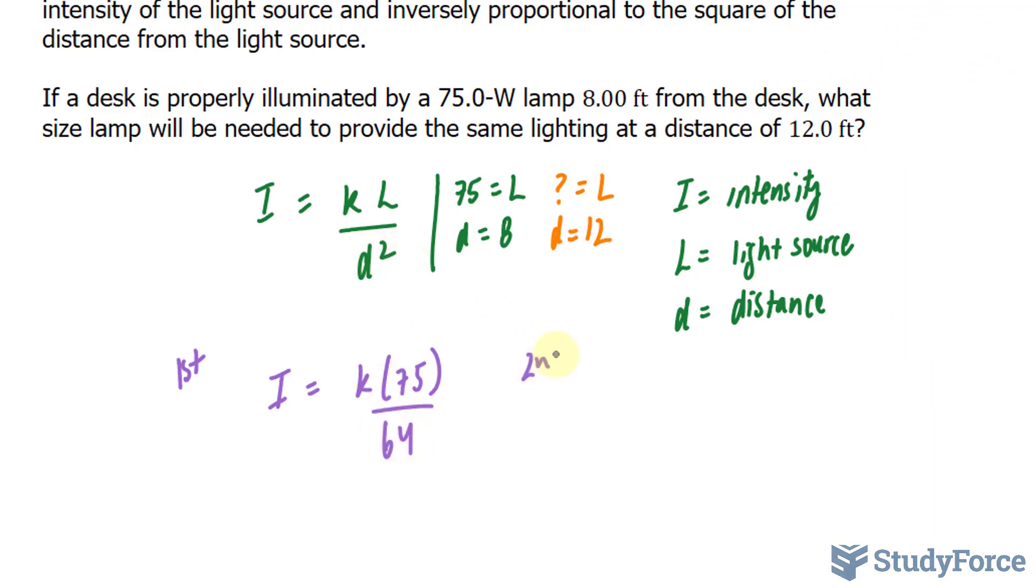And the second equation will also be I equals K, and this time we don't know the light source and that's what we're looking for, so I'll leave it as L over the distance of 12 to the power of 2, which is 144.